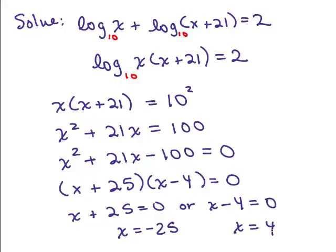Now remember you must check both of these in the original. So if we go back up to the original, if you plug in negative 25 for x, you're taking the log of a negative number and that's not allowed. So hopefully right away you see that that's not going to be a solution. It's not that x can't be negative, it's that when you're checking it back in the original you can't take the log of a negative number.